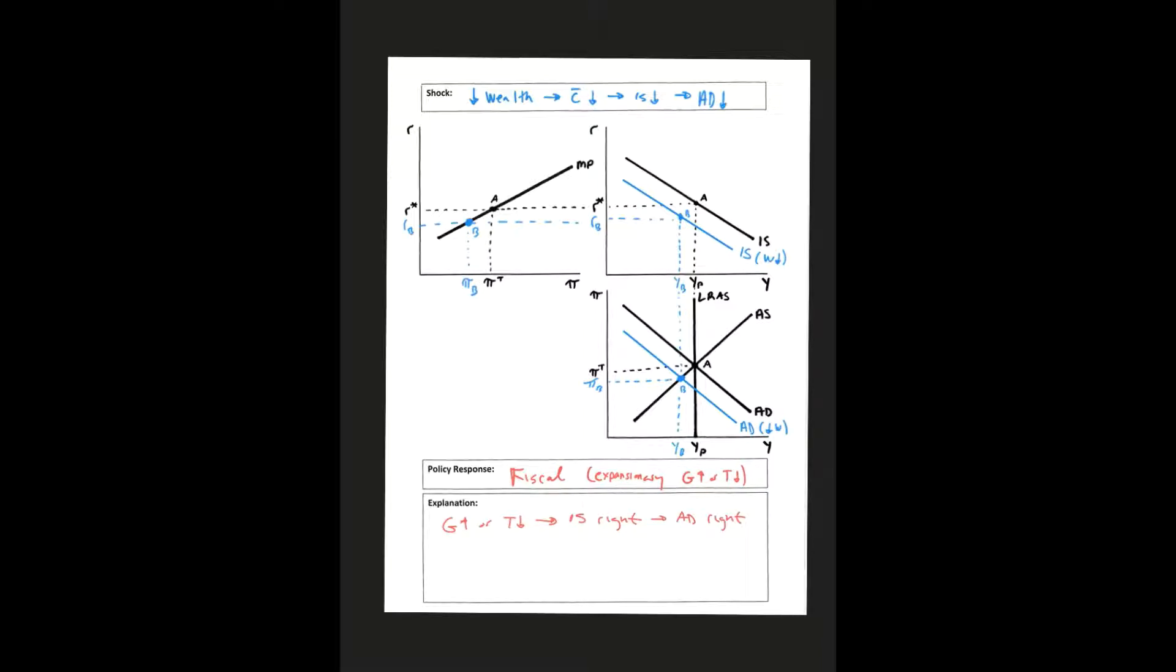So let's see how that would be the case. We know that the IS curve is going to come back, and we know the AD curve is going to come back. And since there's no monetary policy, MP is just going to stay the same.